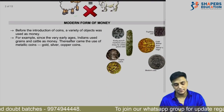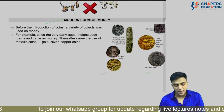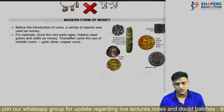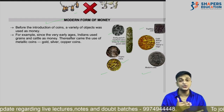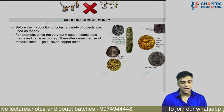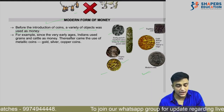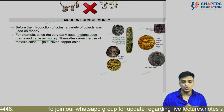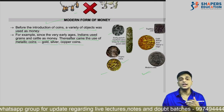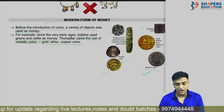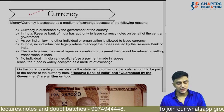Looking at the evolution of money — from early punch mark coins to Gupta period coins, gold mohurs from Akbar's reign — money has fully evolved. Before coins, Indians used grains and cattle as money. Then came metal coins — gold, silver, copper. Gradually money evolved, and today we have modern forms of currency which we use as a medium of exchange.